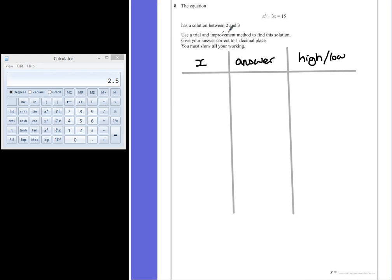So if we know that the solution lies between 2 and 3, we could start in the middle. I'm going to go with 2.5. We're substituting 2.5 into this equation. So we have 2.5³ - 3 × 2.5. We're going to put this into the calculator. 2.5 to the power of 3 subtract 3 times 2.5, close the brackets. That gives us an answer of 8.125. Now that one is quite clearly far too low.